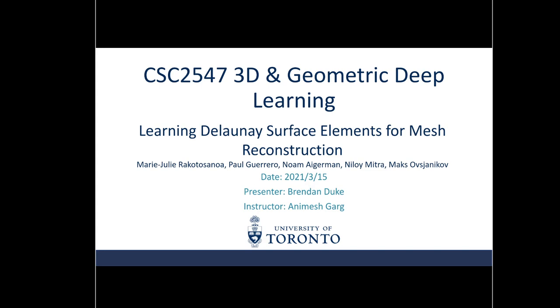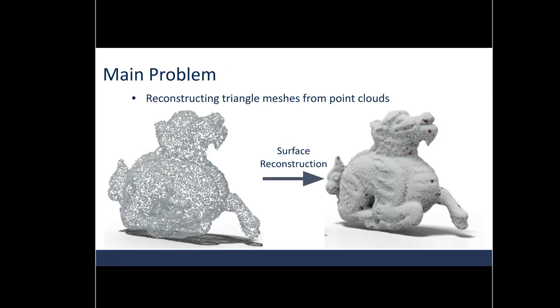Hello, today I'm going to talk about learning Delaunay surface elements for mesh reconstruction. Suppose we have a point cloud sampled from an object. How do we reconstruct a mesh? We want to take in a point cloud as input, run a surface reconstruction algorithm, and produce a mesh consisting of triangles, shown on the right. This is the problem tackled by this work.